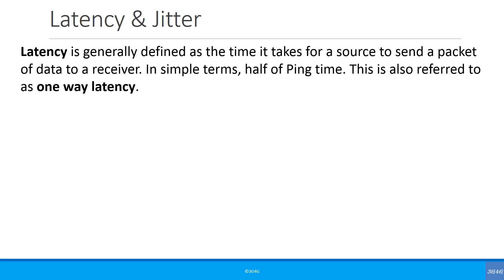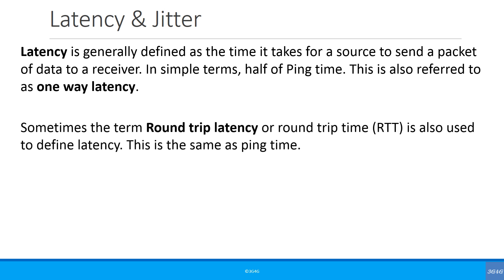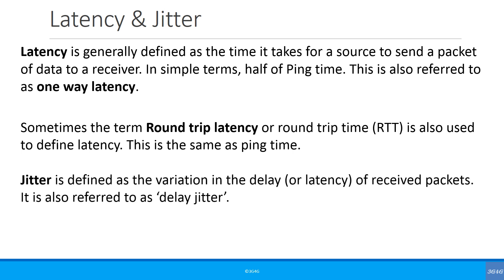Latency is generally defined as the time it takes for a source to send a packet of data to a receiver. In simple terms, this is half of the ping time, also referred to as one-way latency. Sometimes the term round-trip latency or round-trip time is also used, which is the same as the ping time. Jitter is defined as the variation in delay or latency of received packets, also referred to as delay jitter.